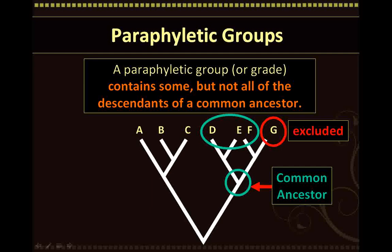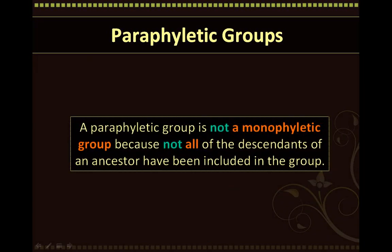This could be due to many reasons. Perhaps G rapidly acquired many new characteristics, making it appear to be quite unrelated to D, E, and F. Remember Darwin's second big idea, because of which organisms that are closely related can appear to be really different — which is why G was not included. A paraphyletic group is not a monophyletic group, because not all of the descendants of a common ancestor have been included in the group. Some descendants have been left out.